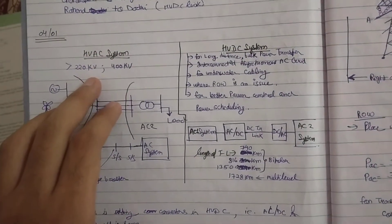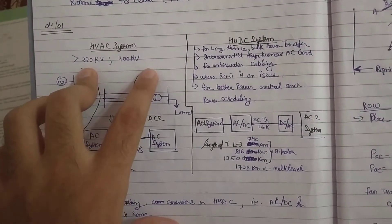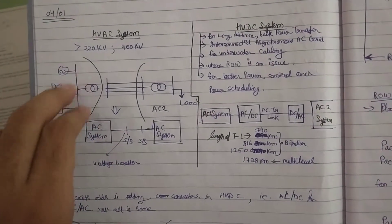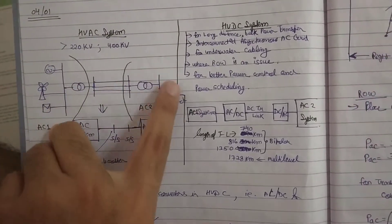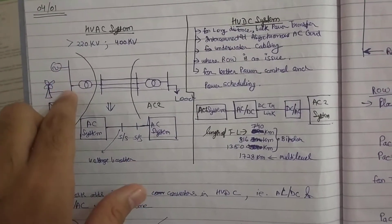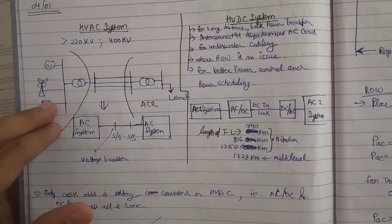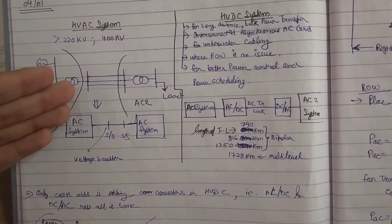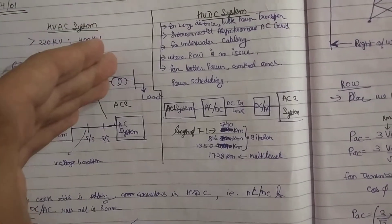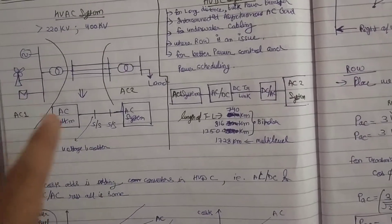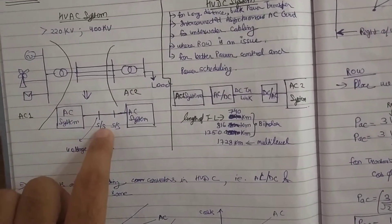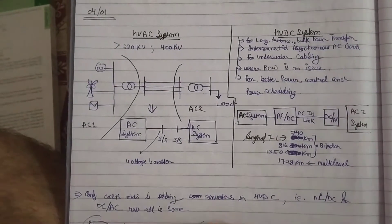First of all, the HVAC system — greater than 220 kV, 400 kV. We will talk about the HVAC system: generation, transmission, and distribution. How can I do the generation? This can be a power plant, a wind turbine, or solar. I have to pass it through a substation, then a transmission line, again through a substation, and then to the load. So I have two AC systems and two substation systems to meet the losses.